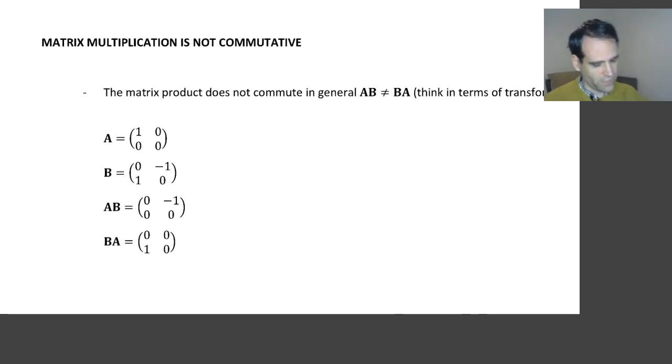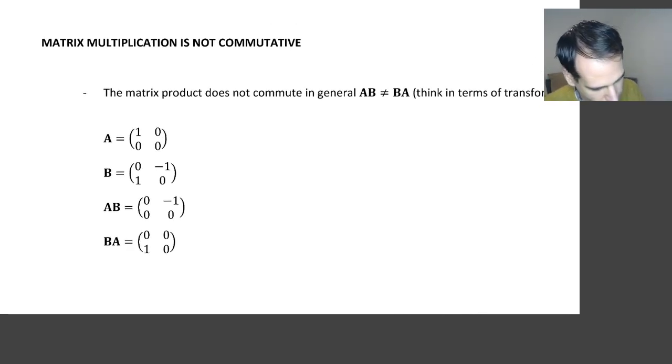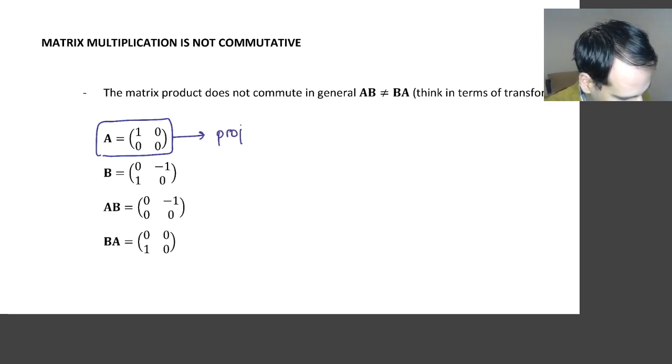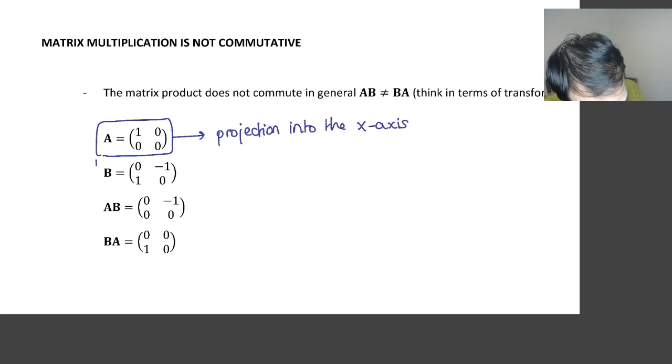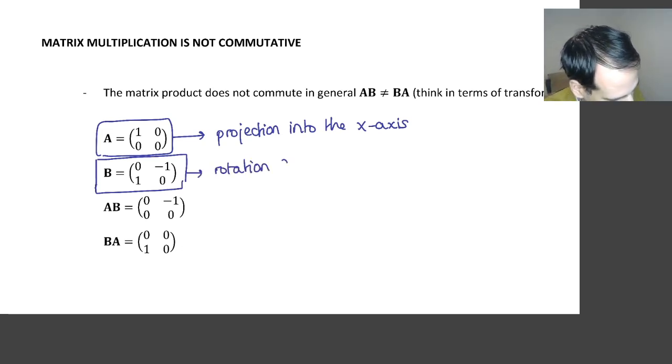Have a look at this example. So in this example I have a matrix A, and this matrix represents a projection into the x-axis. And now I have a matrix B, and this matrix represents a rotation 90 degrees anticlockwise. We have seen these examples in previous problems.